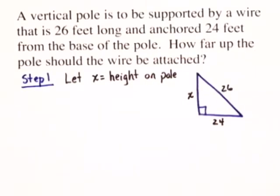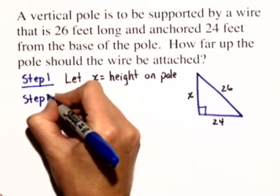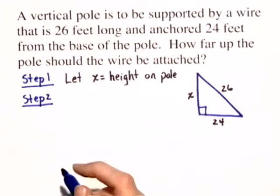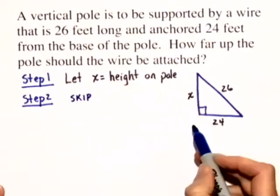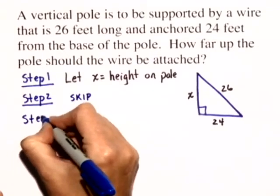Now we're ready for step 2. Normally in step 2 we let any other unknown quantities be defined in terms of X, but in this case we can skip step 2 because there are no other unknown quantities in our triangle. So we'll go ahead and move on to step 3.